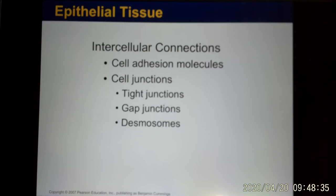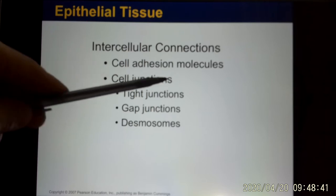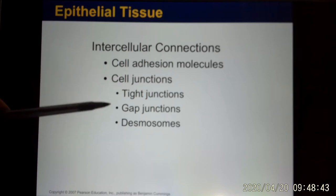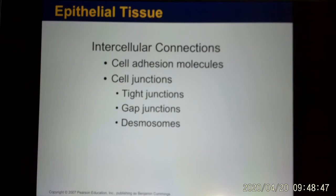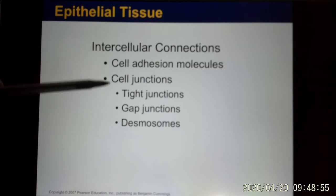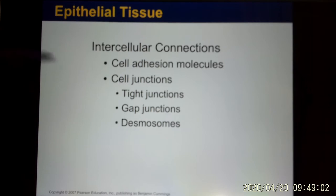Epithelium cells are tightly packed together and have three kinds of junctions to glue the cells together: tight junction, gap junction, and desmosome. These were first identified in epithelium tissue. Some, like gap junctions and desmosomes, have also been found in other tissue types, like cardiac muscle in the heart.